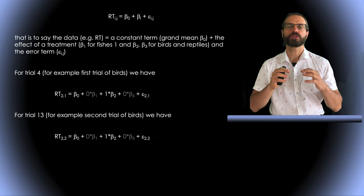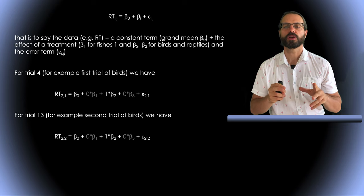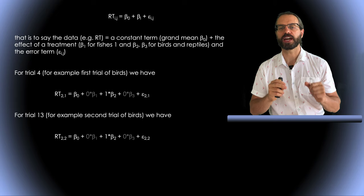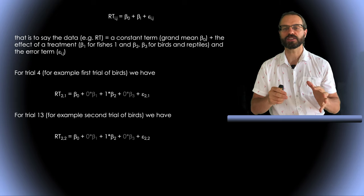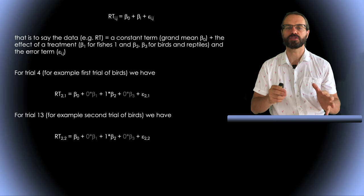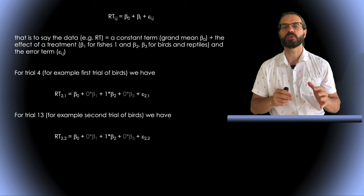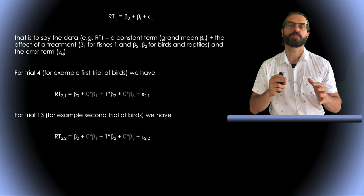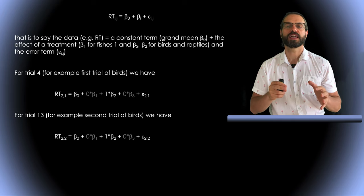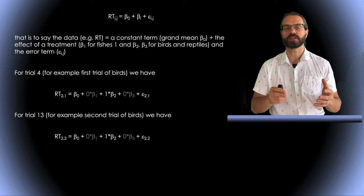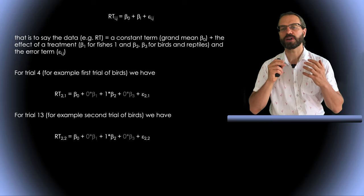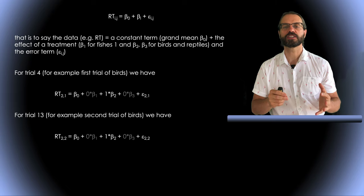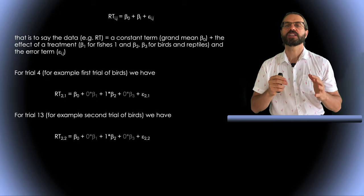To do so we would use this type of linear model where we now have one beta parameter per category of animal. That is to say the data, reaction time, is equal to a constant term the grand mean beta zero plus the effect of treatment beta one for fishes beta two for birds beta three for reptiles and the error term epsilon.